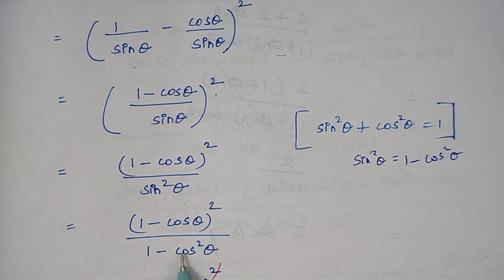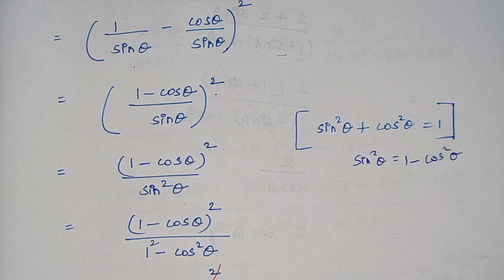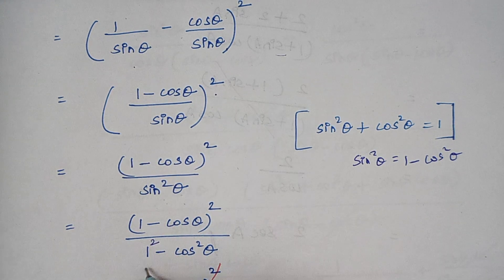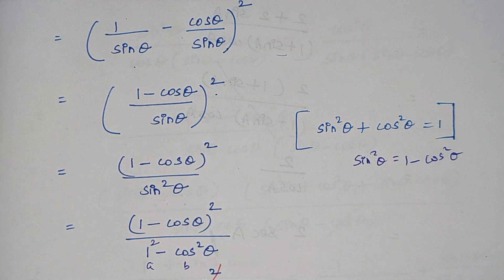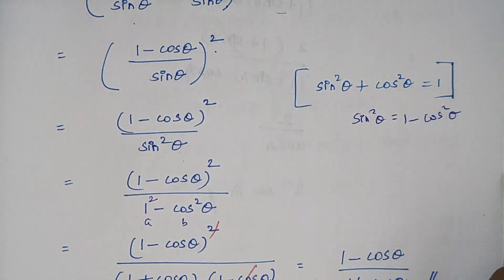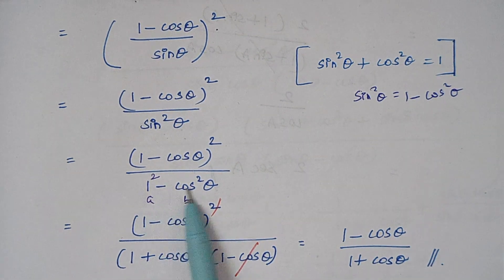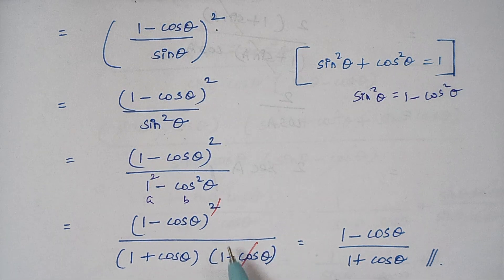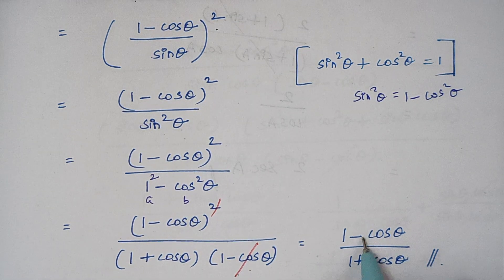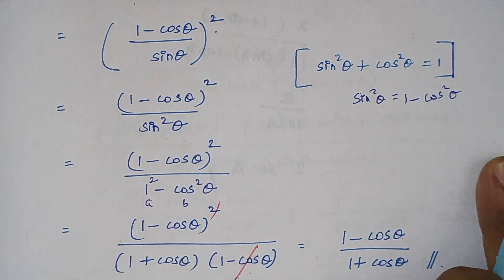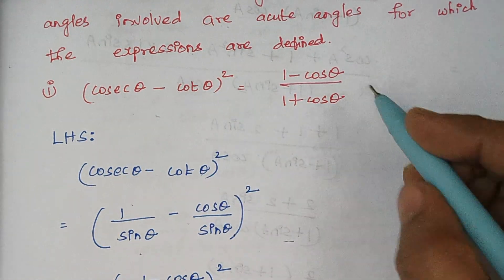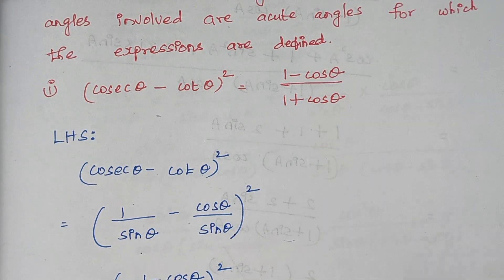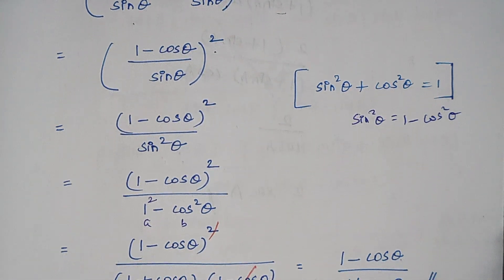Now 1 minus cos square theta can be written as 1 square minus cos square, which is of the format a square minus b square, so we write it as a plus b into a minus b. We keep the numerator as such and write the denominator as 1 plus cos theta into 1 minus cos theta. This square and that term cancel, and finally we have 1 minus cos theta by 1 plus cos theta — which is exactly what we need.